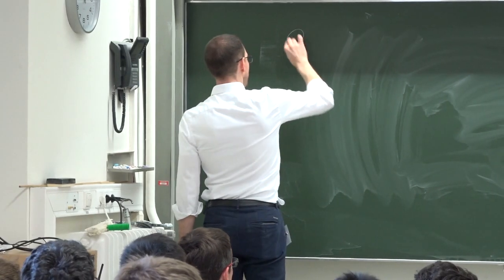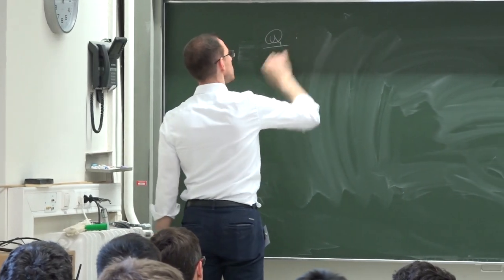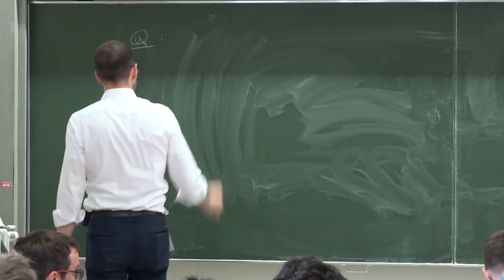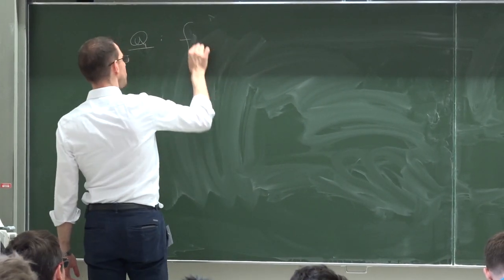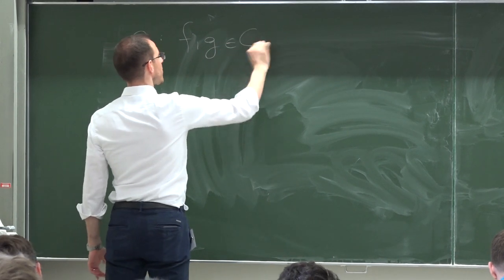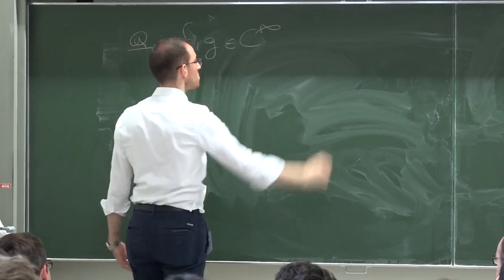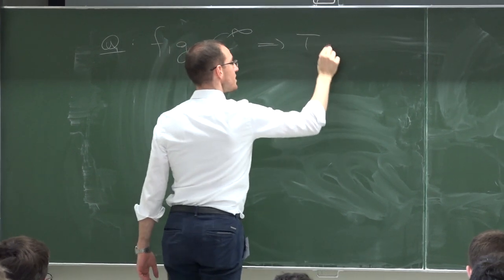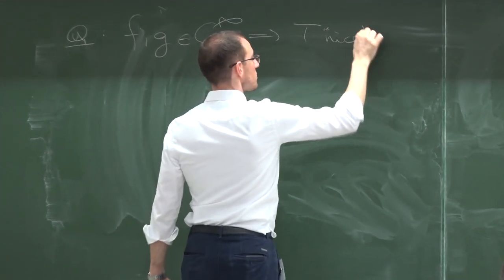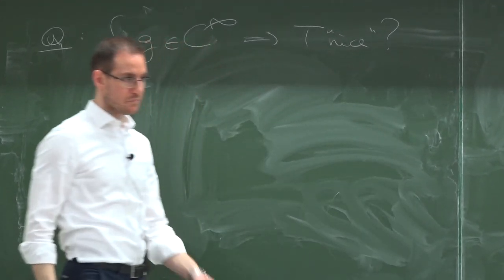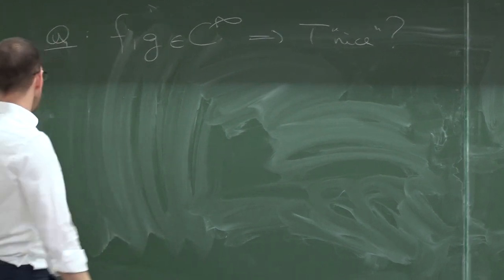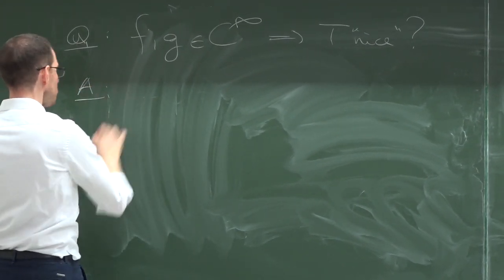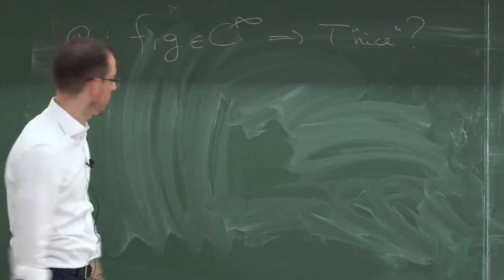So the question of regularity — we are in the quadratic cost for the moment — is: suppose that F and G are smooth, C-infinity. Does this imply that T, the transport map, is nice in some sense? The answer is actually easy to give.